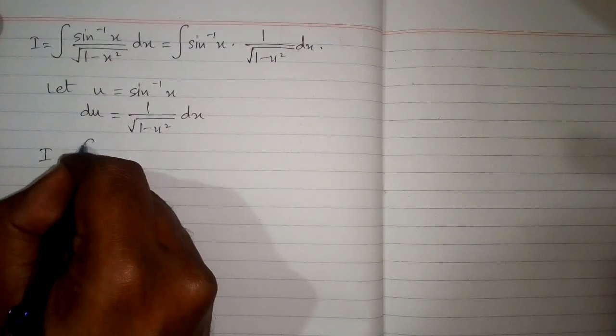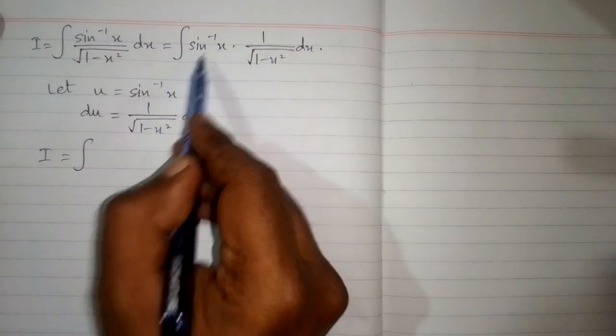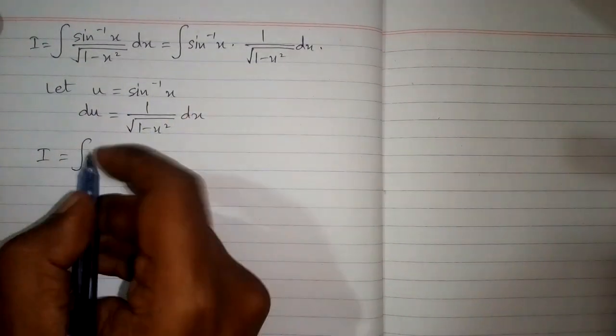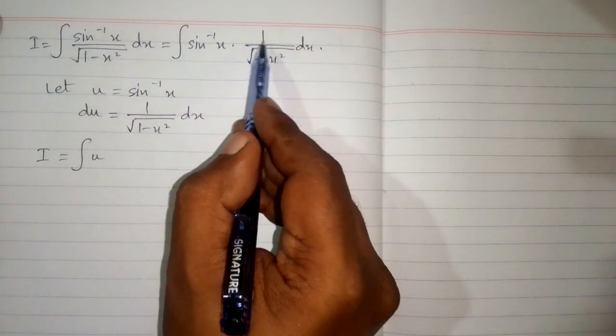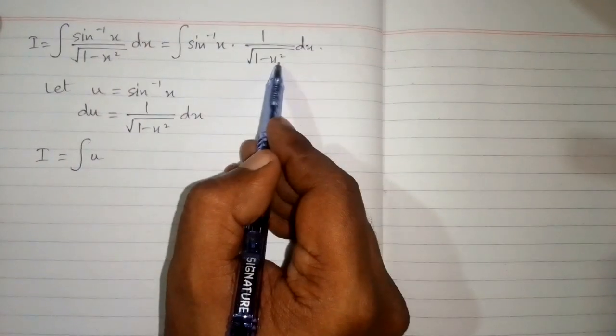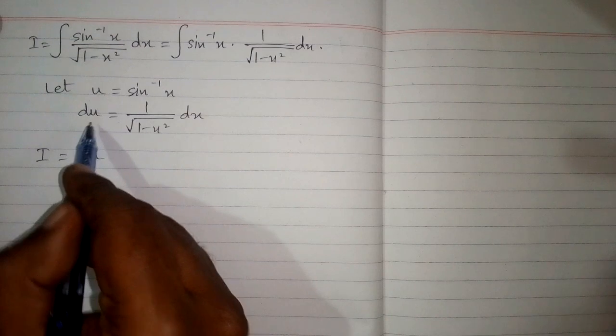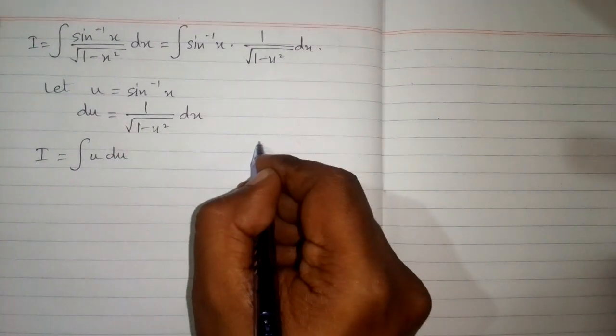So the above integral I can be written as integral of, now we put u in place of inverse sine of x, and in place of 1 upon square root of 1 minus x square dx we can put du.